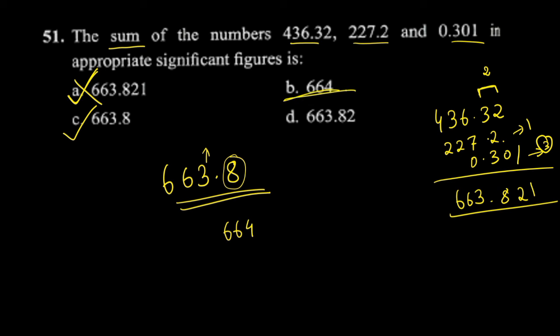So this is the right answer. Looking at the decimal places, we round to 1 decimal place. The answer is 663.8, which can be rounded to 664. This is the correct answer.